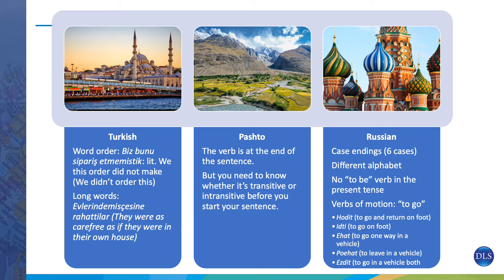Pashto is also a difficult language where word order presents a challenge — the verb goes at the end of the sentence. Russian is another Category 3 language. Its case endings are challenging, it has a different alphabet, and there's no 'to be' verb in the present tense. The vocabulary can also be difficult: in English we have one word for 'to go,' but Russian has many different verbs of motion describing how you're going somewhere.